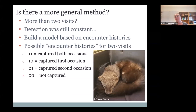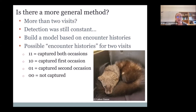We rarely sample a population just twice — a lot of wildlife work is done over really long periods of monitoring, going out every year or every week for a summer. So what if you have more than two visits? Lincoln-Peterson doesn't really work anymore, and I mentioned one issue is that detection may not be constant — we only estimated one detection probability. So there's a more general method we can use: building a model based on encounter histories, which are just records of how many individuals you caught every time, sometimes, or no times.